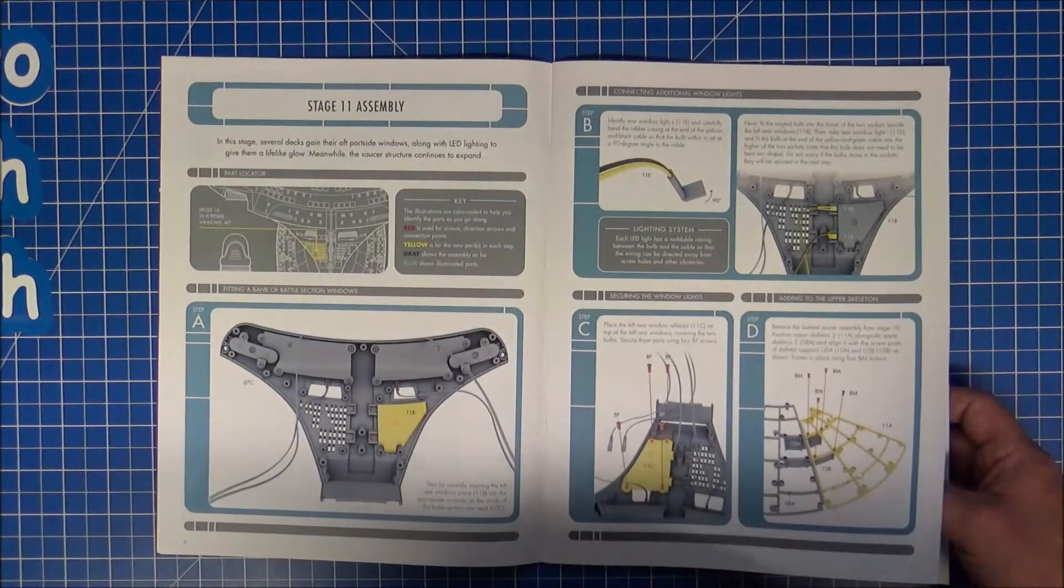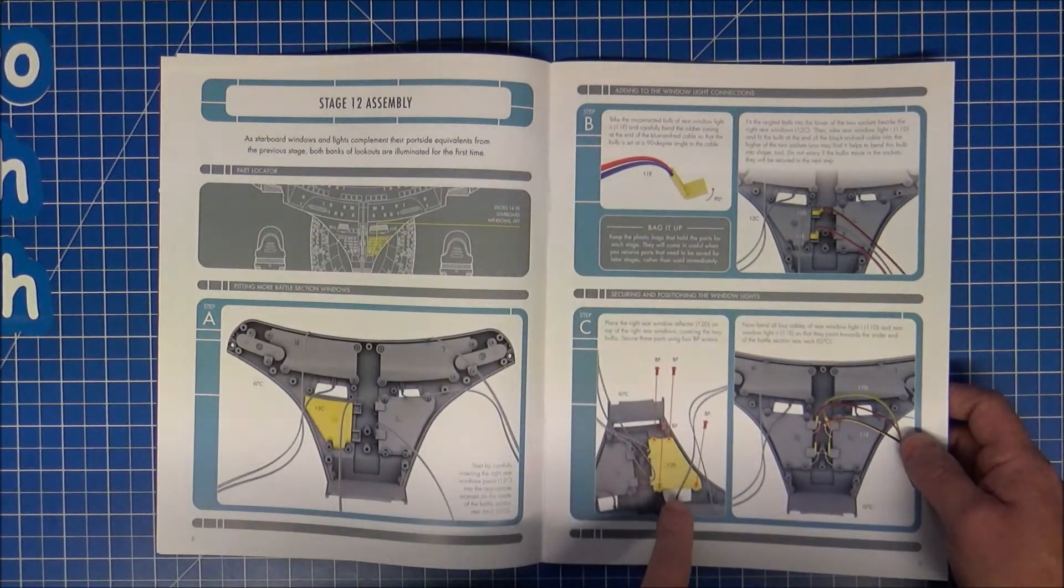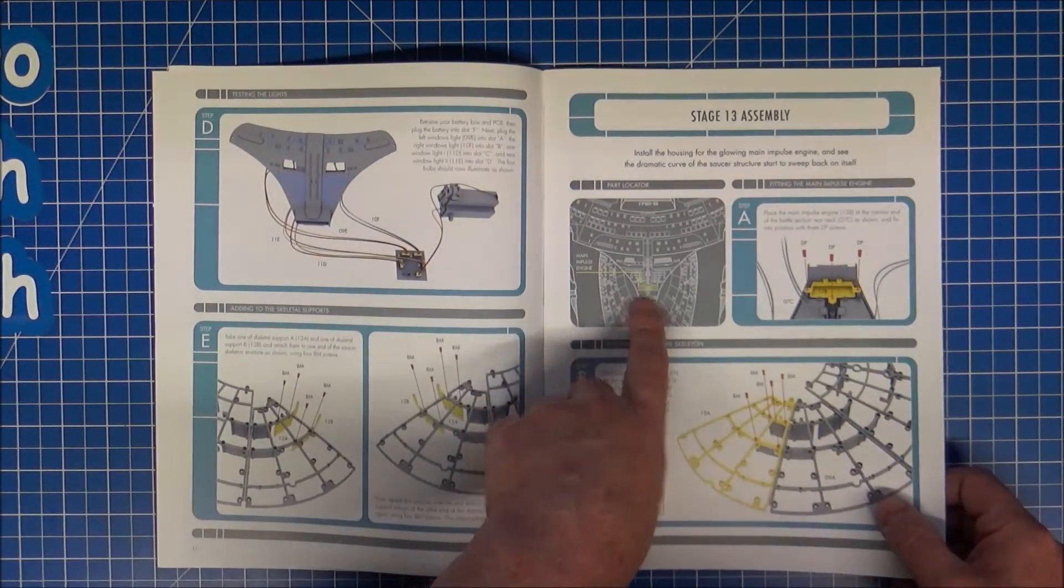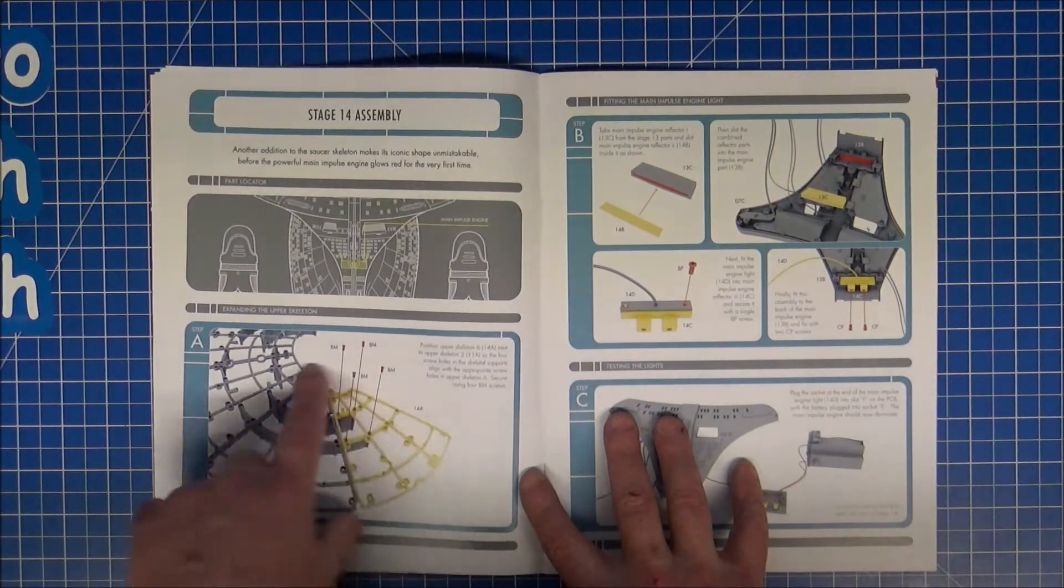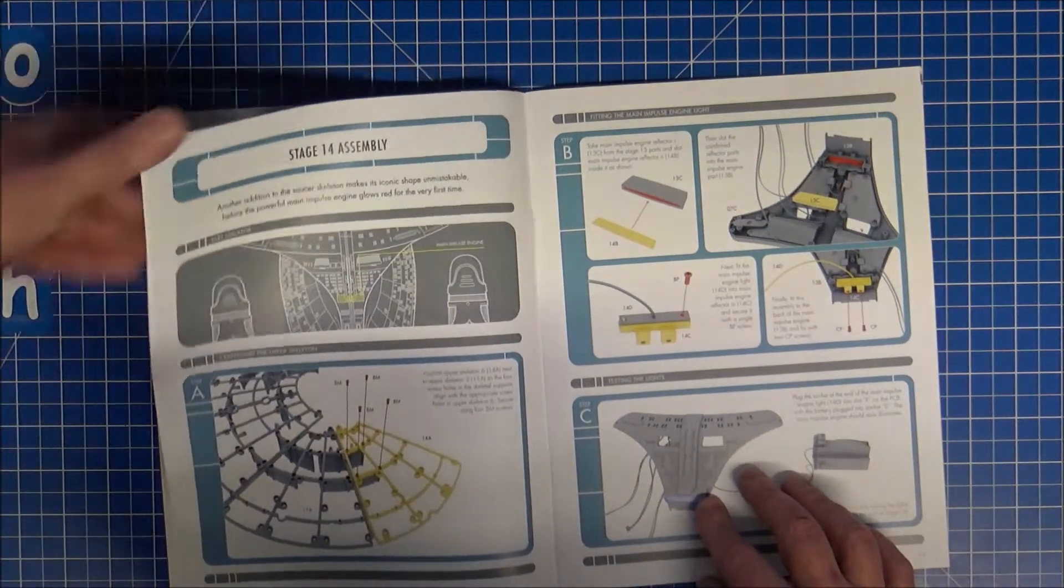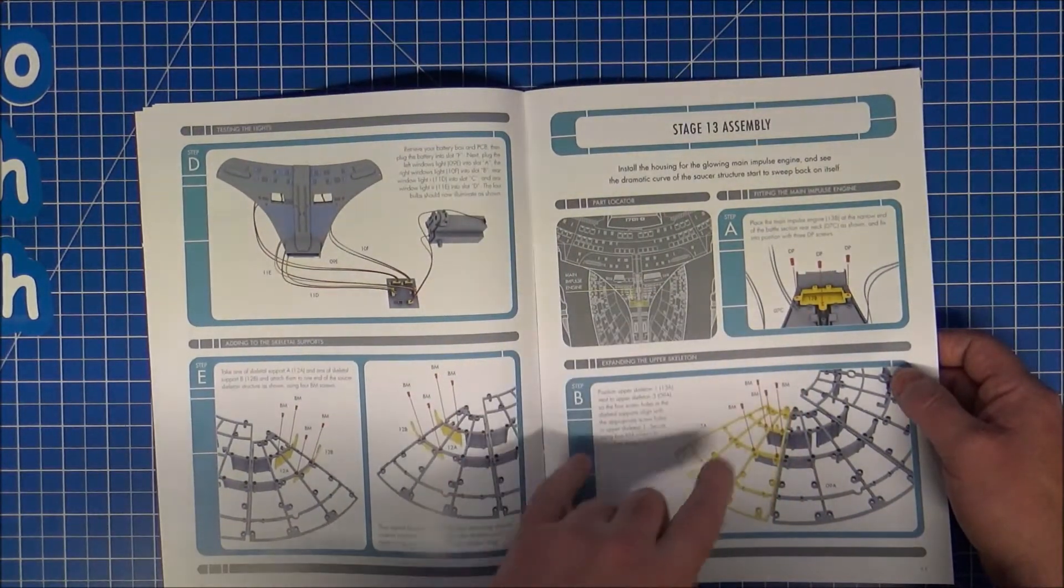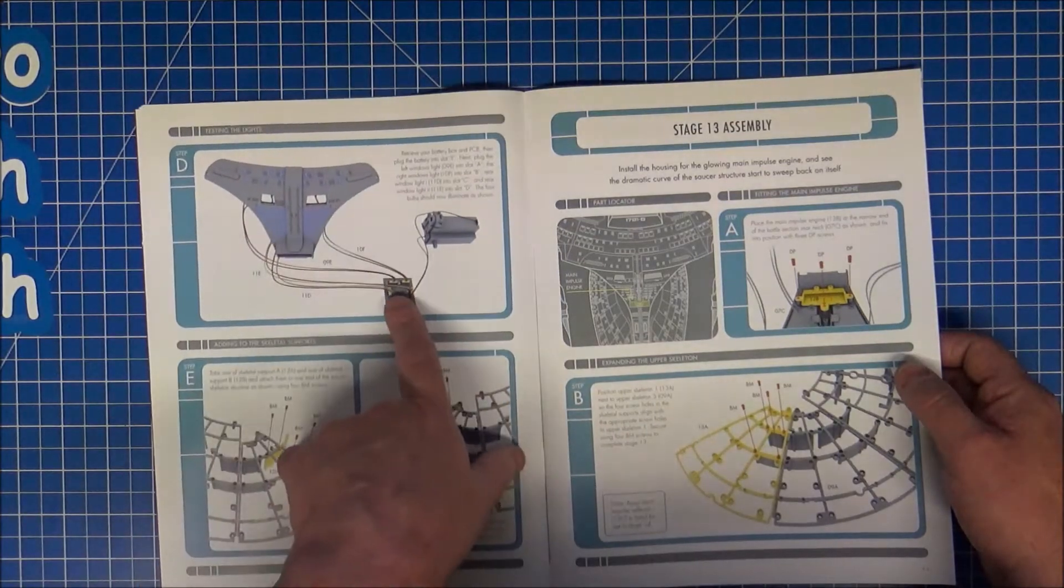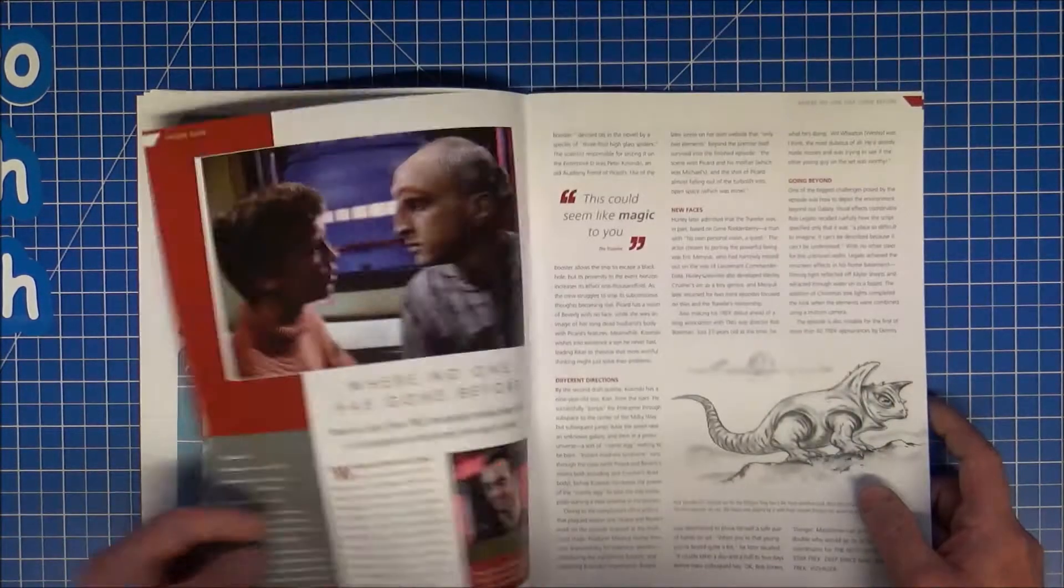So we'll do more on the neck and add any part on there, then we're doing the other side lights. We've got more on the support on the saucer. Oh, it's the main impulse engine, cool. And more on the saucer. Is that the impulse engine again? Why is there two? Looks like that's just the housing that you screw in place.